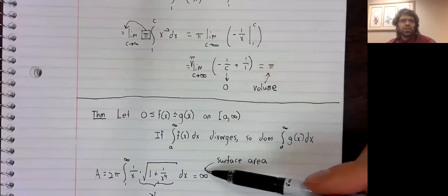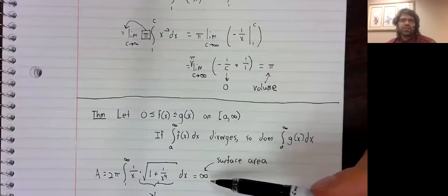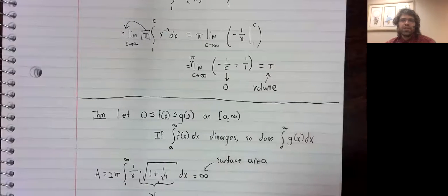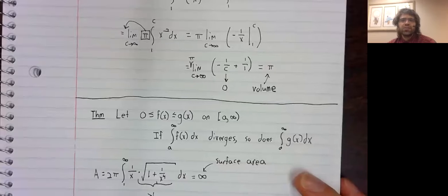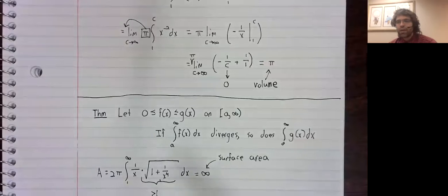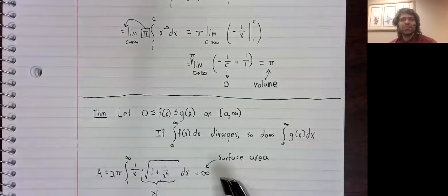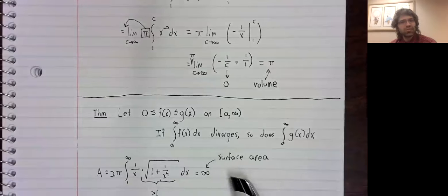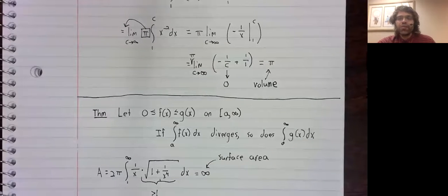So what this seems to be saying, for example, is that if Gabriel's horn existed as a physical object, we could fill it with a finite amount of paint, we could not, however, paint its inside surface, because its inside surface has an infinite surface area.